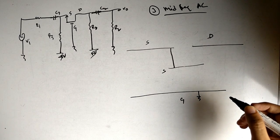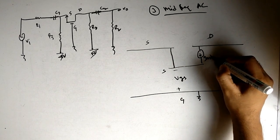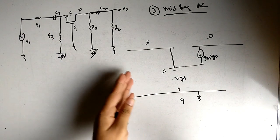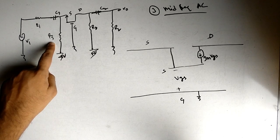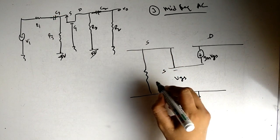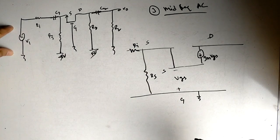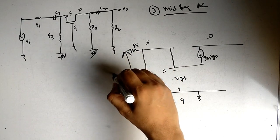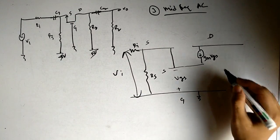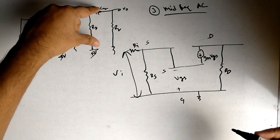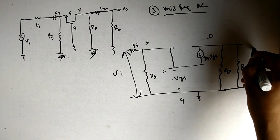We draw a line connecting gate and ground to simplify the circuit. The compulsory components in the small-signal model are: plus-minus Vgs, and the dependent current source gm×Vgs flowing from drain to source. On the left side we have Rs from source to ground and Ri in series, with input voltage Vi. On the right side we have Rd from drain to ground, Rl in parallel, and output voltage Vo.